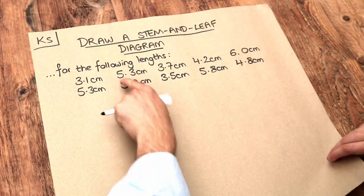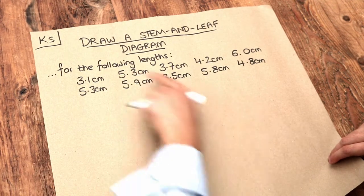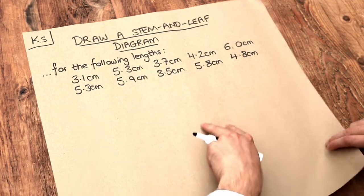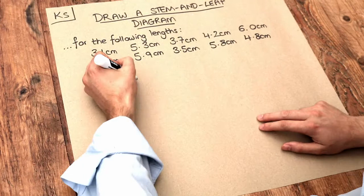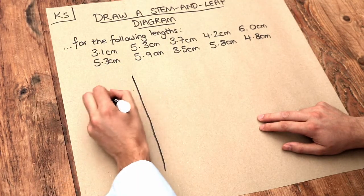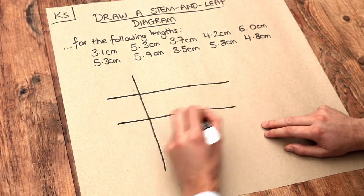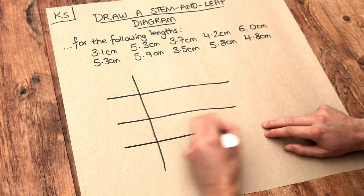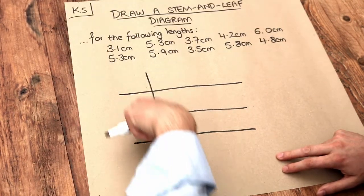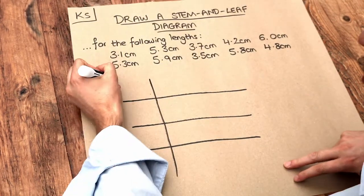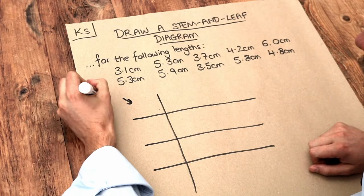It's really useful when we have two-digit numbers like the five and the three here in this 5.3 centimeters. The way it works is we have a grid like this, and on the left we have the first digit of each number — these are known as the stems.